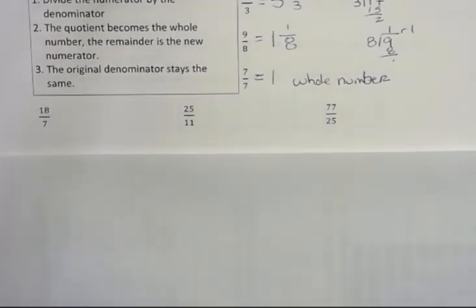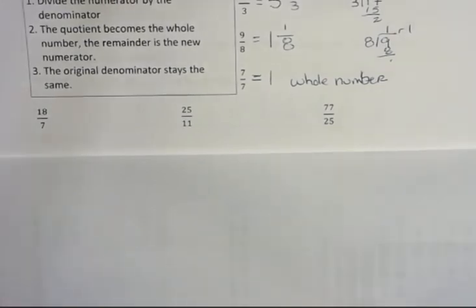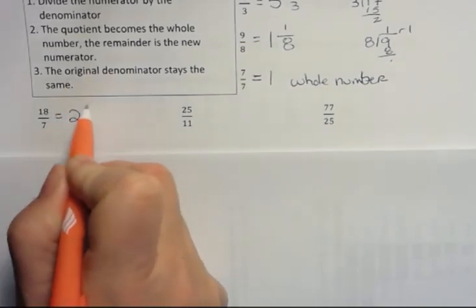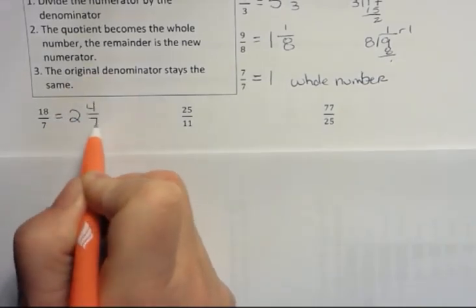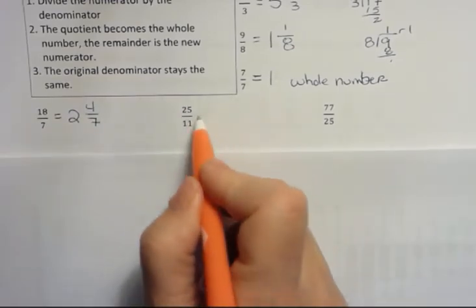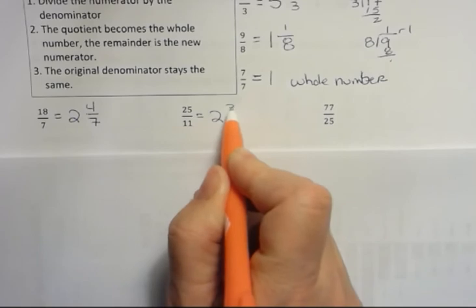Okay, again, maybe try these three by yourself, pause the video, and then come back and see how you did. 7 goes into 18 twice with 4 left over.